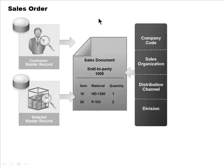The sales order draws some information from the customer master and some from the material master, along with other master data. The very first screen when you create a sales order prompts you to enter four key fields first, then you proceed to the next screen to enter details like customer, material, and dates.